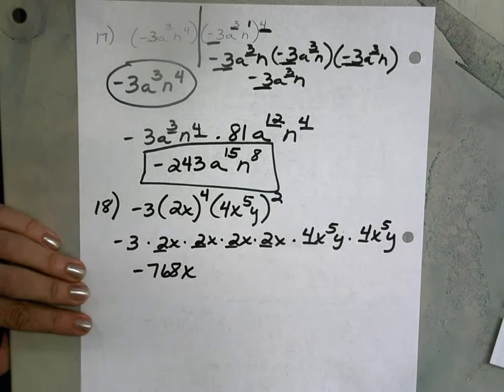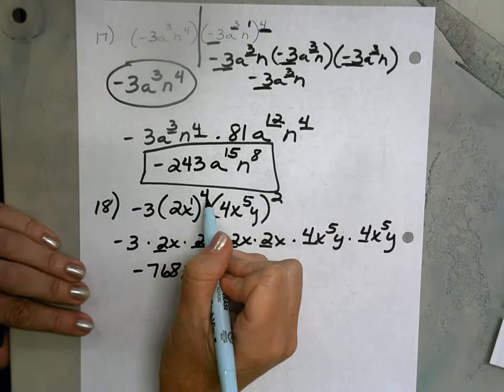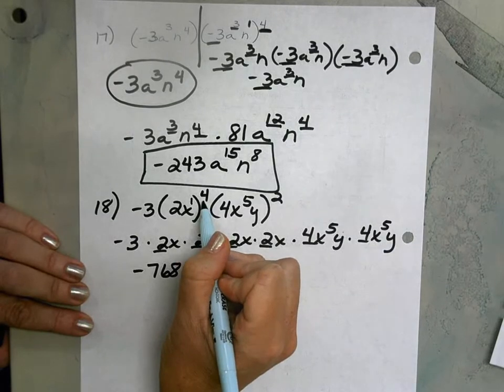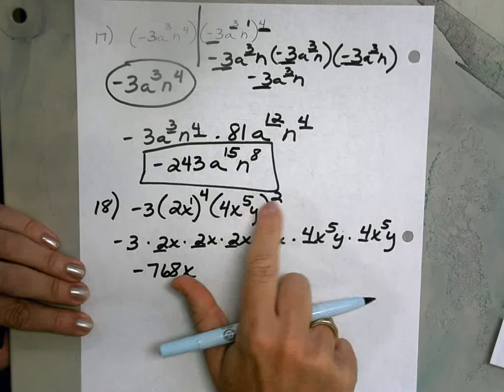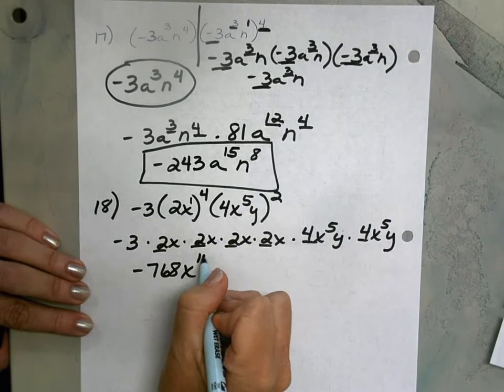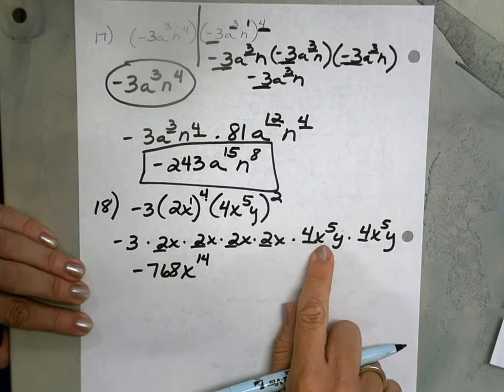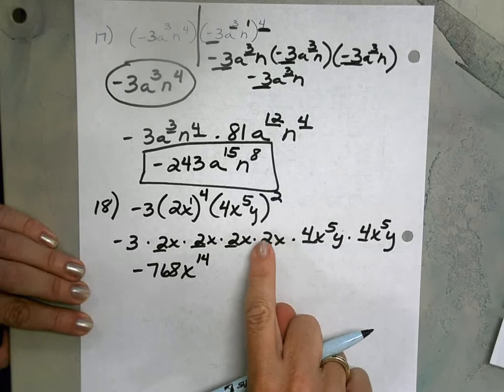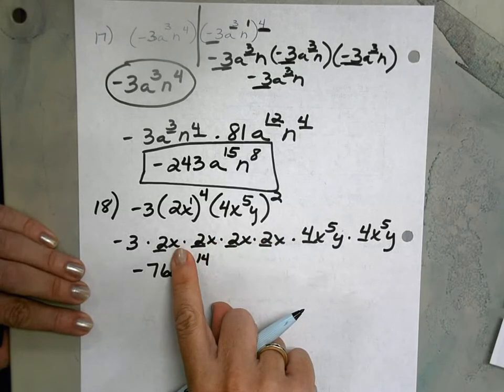Let's look at your exponent for x. I have x to the first times 4. So that's x to the fourth. x to the fifth times 2 is x to the tenth. So I should have x to the 14th. But let's check. x to the fifth. And x to the fifth is x to the tenth. x to the eleventh, twelfth, thirteenth, x to the fourteenth.